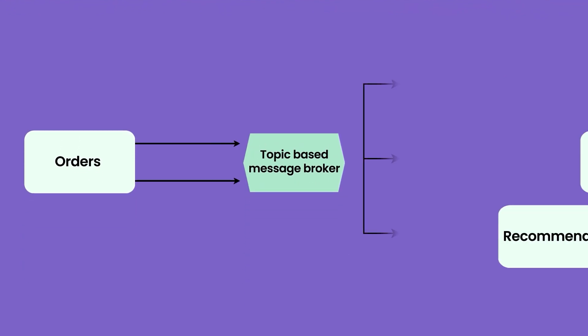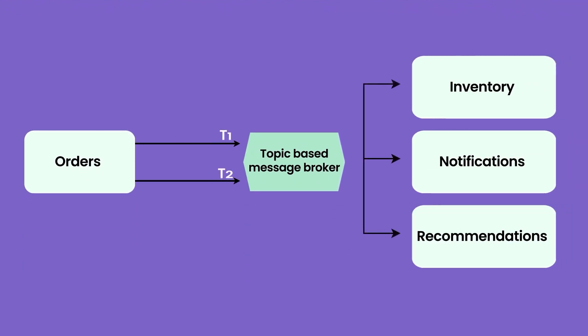For topic-based message brokers, one approach is to retry the message. If a message was supposed to be consumed by service one and service two, but service two didn't consume it, you need to configure the message to be retried for service two after some time. Kafka provides this capability — you can configure how long to retain messages and whether to retry. The retry logic, retention time, and delivery count are fundamental building blocks of a message broker, and deep knowledge of these topics is required when implementing an event-based system.